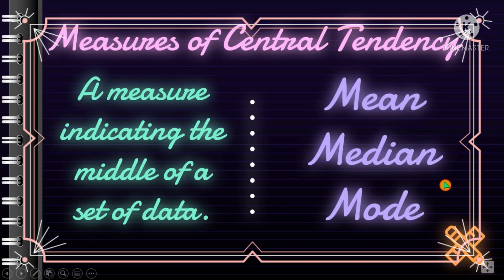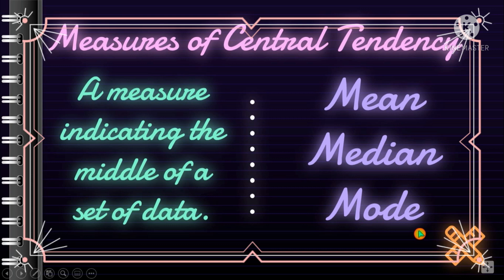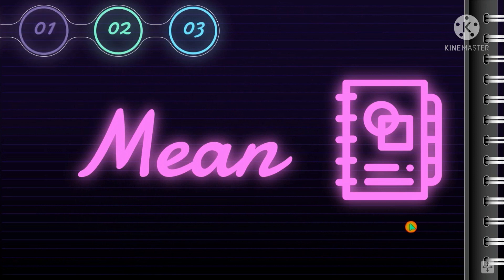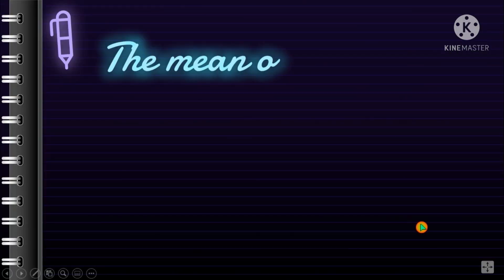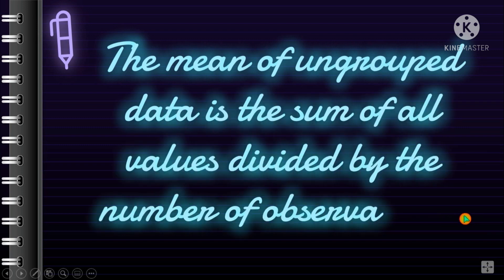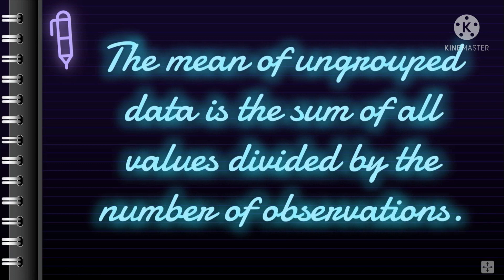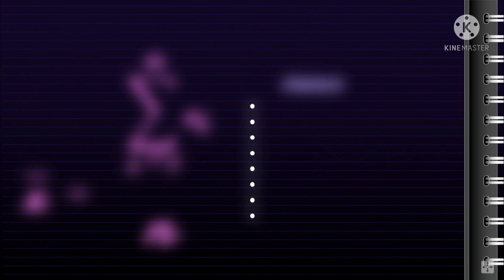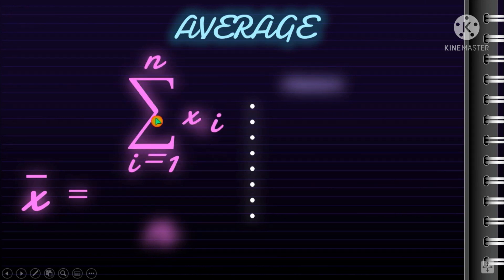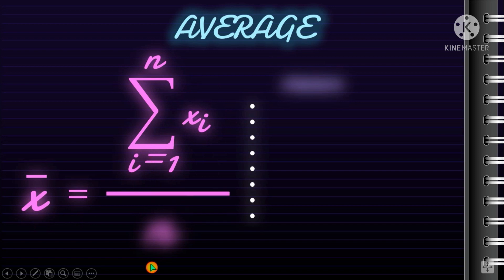Let's proceed to the first one: getting the mean. The mean of ungrouped data is the sum of all the values divided by the number of observations. It's most commonly called the average. We use the formula: x-bar equals the summation of x-sub-i, where i is equal to 1 to n, divided by n.